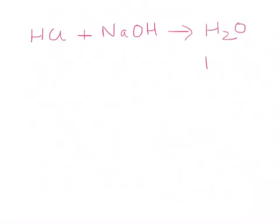Let's look at some examples. Hydrochloric acid, HCl, plus sodium hydroxide, NaOH, will form water, H2O, plus sodium chloride. The sodium comes from the base and the chloride comes from the acid.